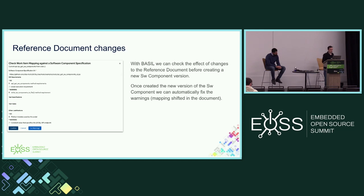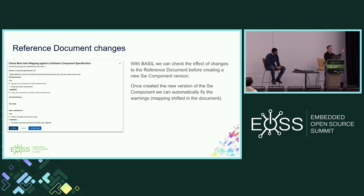BASIL will allow you to analyze the impact of a possible evolution of the document and help you understand all the impact on work items. You can automatically fix the ones that are just warnings when a piece of the specification has simply shifted in the document. It automates a few processes to reduce manual effort. When specifying a software component in BASIL, you can link it to a remote git repository - pointing to the HEAD to follow evolution, or to a particular commit hash for a specific version.